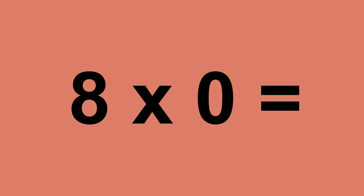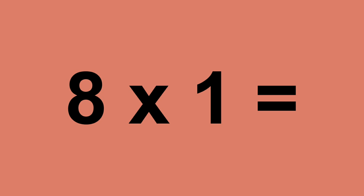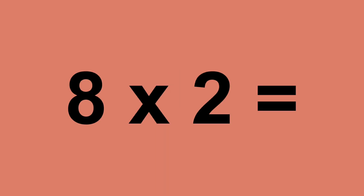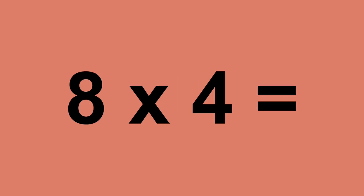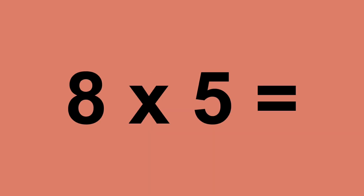Eight times zero equals zero. Eight times one equals eight. Eight times two equals sixteen. Eight times three equals twenty-four. Eight times four equals thirty-two. Eight times five equals forty.